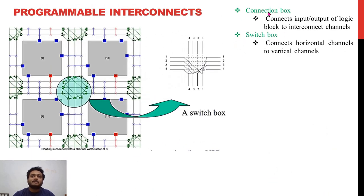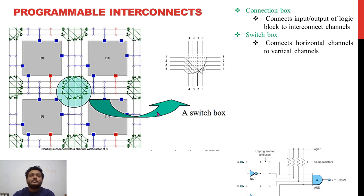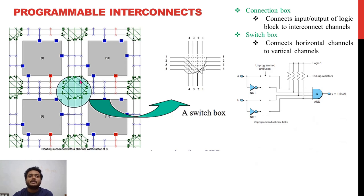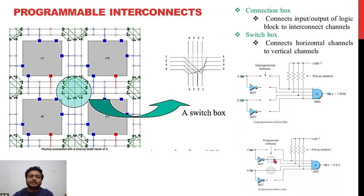Inside FPGAs we have connection boxes and switch boxes. A connection box connects the I/O of a logic block to the interconnect channels. A switch box connects horizontal and vertical channels. This switch box is programmable — which lines connect to which — so that particular signal paths are routed to reach the correct CLB. An anti-fuse interconnect example: when unprogrammed there is no connection; when programmed, the anti-fuse makes the connection. This is your programmable interconnect.